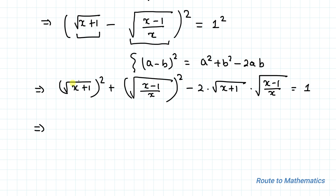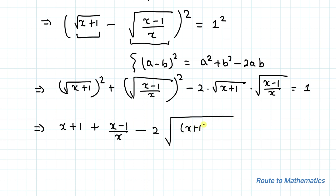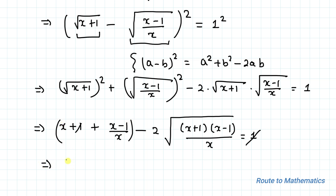Squaring the root terms eliminates the radicals, giving us (x+1) plus (x−1)/x minus 2 times root under (x+1) times root under (x-1)/x, equals 1. The +1 and −1 cancel out, and taking LCM we get (x²+x−1)/x minus 2 times root under (x−1)/x, equals 1.